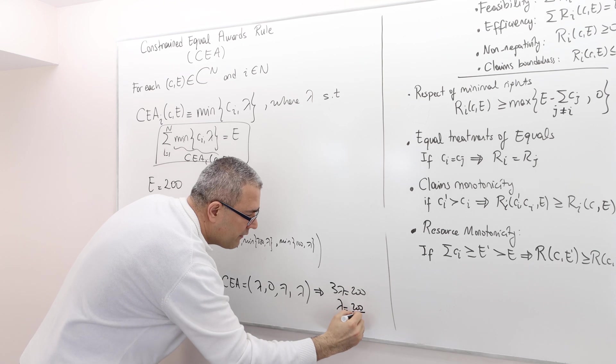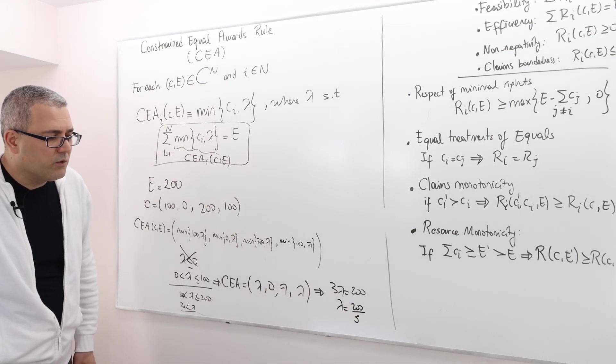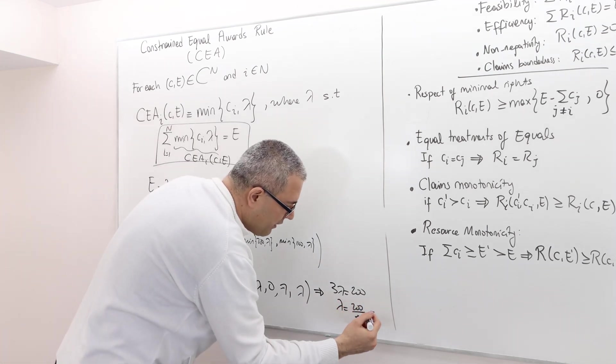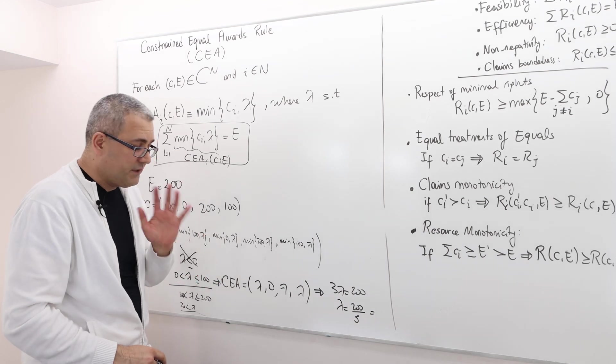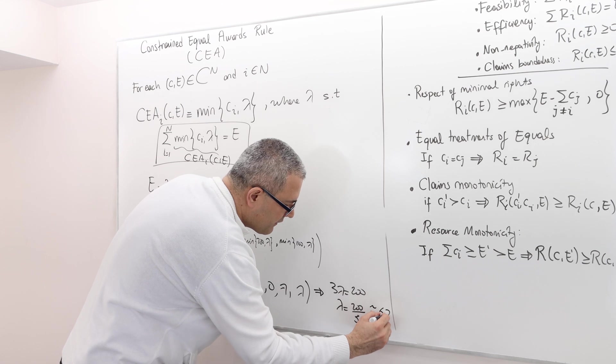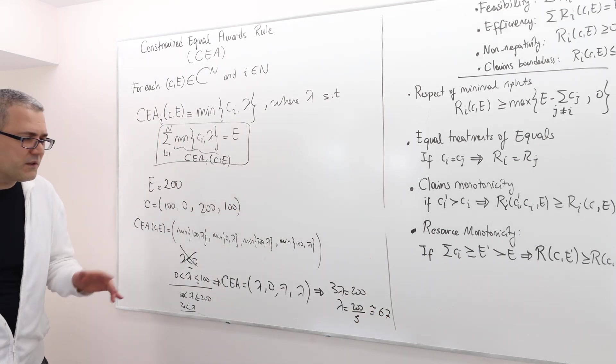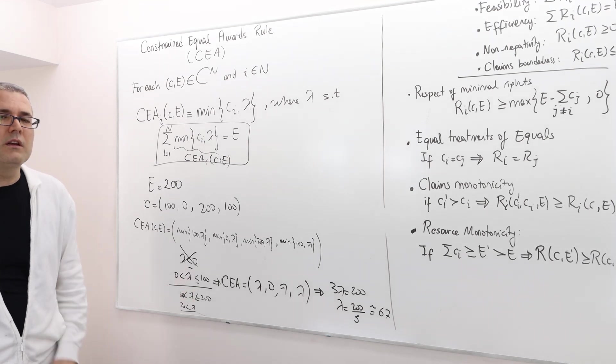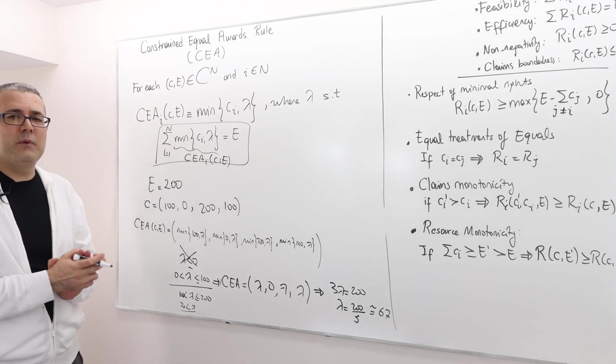What is this summation? When I add them up, 3 lambda equals 200, which is the surplus amount. So lambda has to be equal to 200 divided by 3. This is almost like 66, 67 or something like this, right? Almost like 67. Is it between 0 and 100? Yes, it is. So then I actually found my lambda.